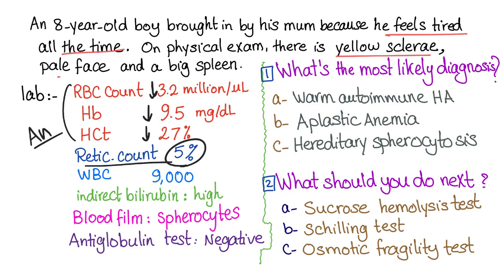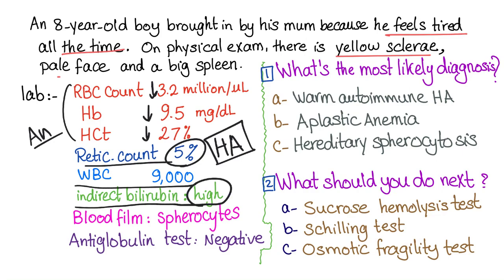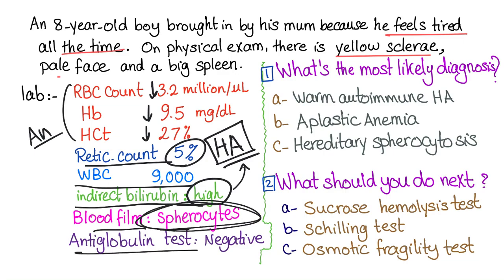The reticulocyte count is high, indicating hemolytic anemia with good bone marrow response. White blood cell count is normal. Indirect bilirubin is high, again consistent with hemolytic anemia. The blood film shows spherocytes — a significant finding. But the antiglobulin test, or Coombs test, is negative. This means hereditary spherocytosis, not autoimmune hemolytic anemia.